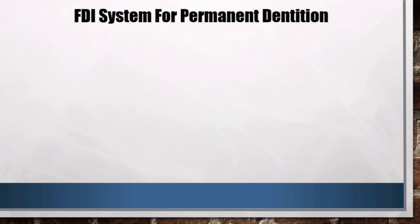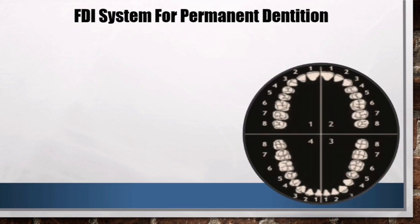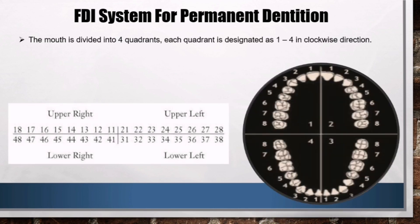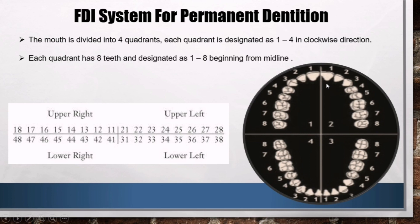FDI System for Permanent Dentition: the mouth is divided into four quadrants, numbered one to four in a clockwise direction — one is upper right, two is upper left, three is lower left, and four is lower right. Each quadrant has eight teeth, designated one to eight beginning from the midline, such that one is the central incisor, three is the canine, and six is the first molar. For example, 16 denotes the permanent maxillary right first molar and is spelled as 'one six,' not 'sixteen.'